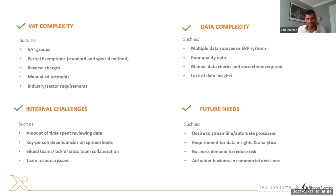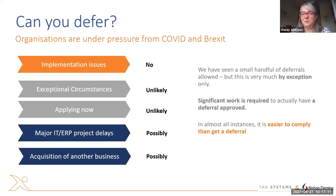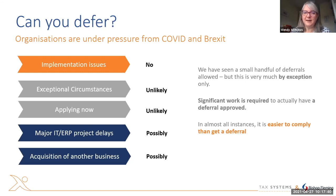The next question we tend to get asked is: are there any options to defer Phase Two in relation to your first submission? Obviously the introduction of Phase Two was delayed as a result of COVID, which has disrupted a lot of businesses hugely. Brexit has also led to huge disruptions for anyone trading internationally with the EU in goods. HMRC in their public notice on Making Tax Digital for VAT do envisage that some businesses might want to defer the obligation to have digital links throughout their process.